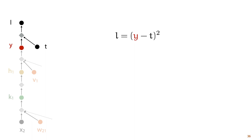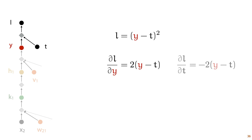Let's see how that works for our example network. The last computation in our computation graph, computed at the very top, is the one that computes the loss from the network output and the target value. We can compute the derivative of the loss with respect to both these input nodes. The derivative of the loss with respect to y we already saw in the last video, and the derivative of the loss with respect to t is the same but with a sign change. Now, these derivatives are not directly useful to us yet, because neither y nor t are values we can change directly. t, the target, is given by the data, so we cannot change that at all. And y we can only change indirectly, by changing our parameters.